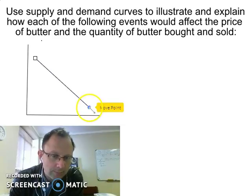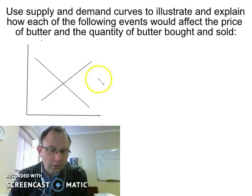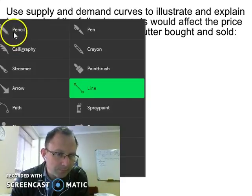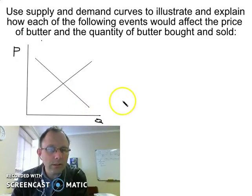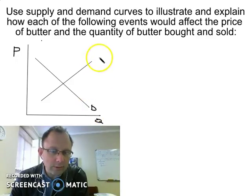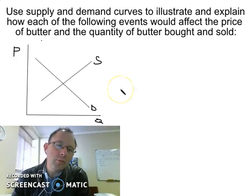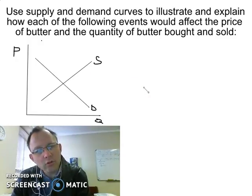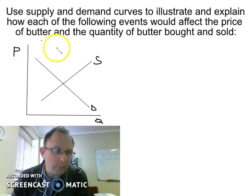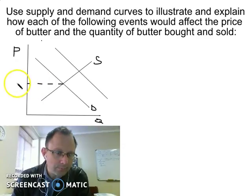Here we go — that's our demand and this is our supply. Price is on the vertical axis and quantity on the horizontal axis. So what happens when the price of margarine increases? That means relative to margarine, the price of butter becomes cheaper. Because butter becomes cheaper relative to margarine, the demand for butter will increase.